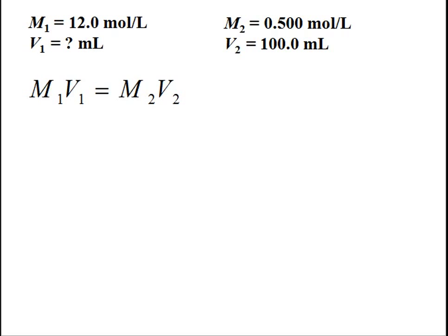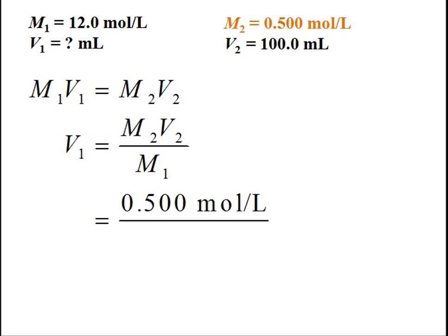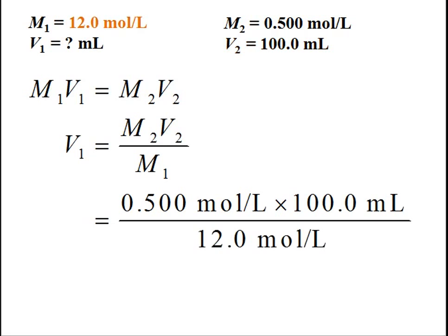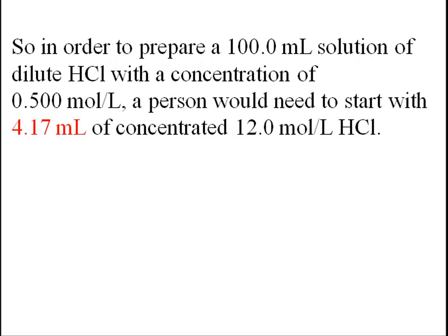We start with the dilution formula, then rearrange it to solve for the unknown, V1. V1 equals M2V2 over M1. M2 is 0.5 moles per liter, V2 is 100 milliliters, and M1 is 12 moles per liter. The units of concentration, moles per liter, cancel from the top and bottom of the fraction. The final answer comes to 4.17 milliliters. So to prepare a 100 milliliter solution of dilute HCl at 0.5 moles per liter, you would need to start with 4.17 milliliters of concentrated 12 molar HCl.